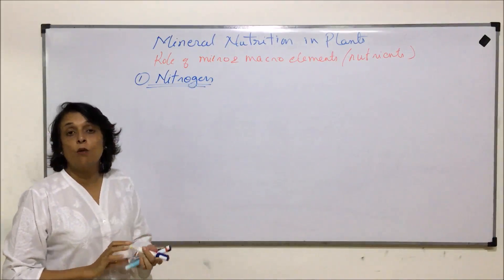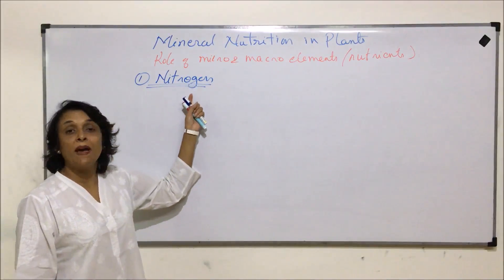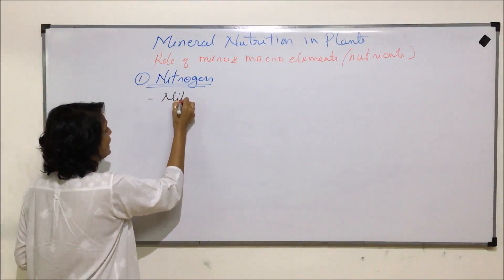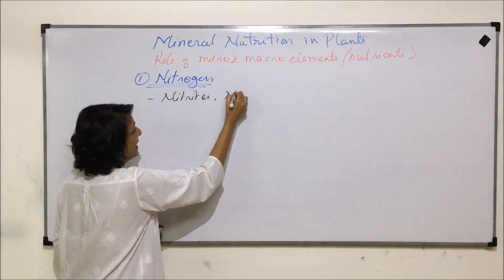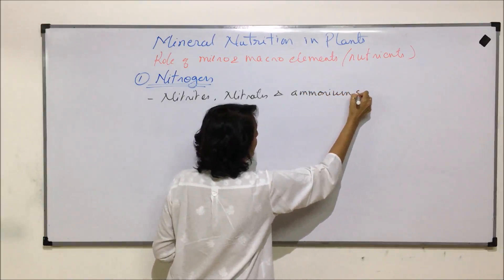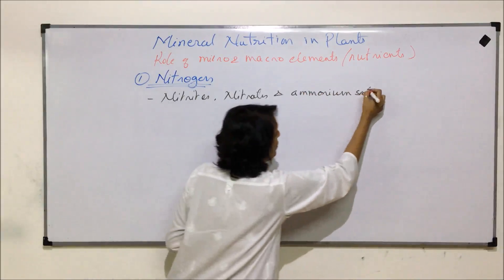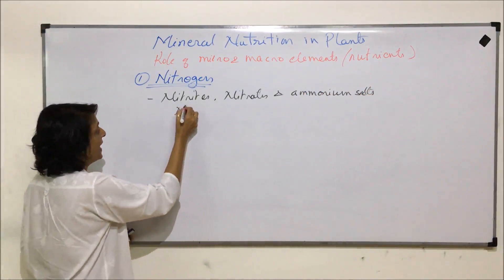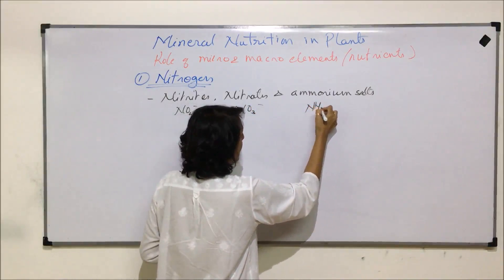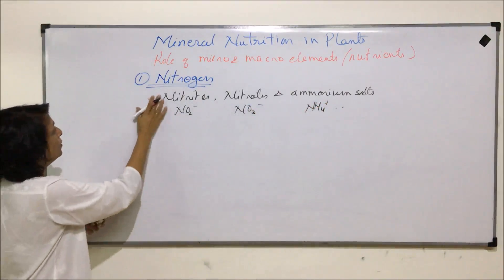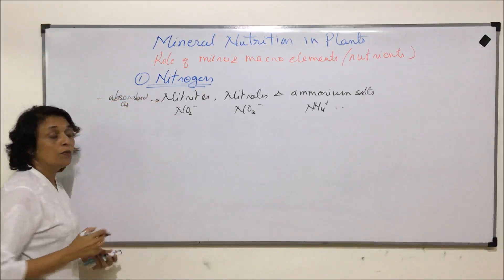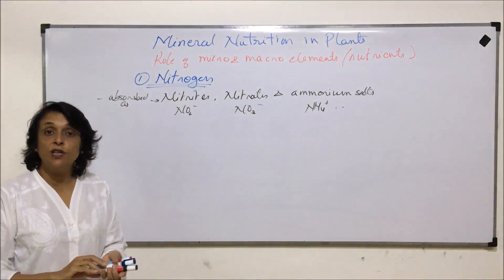Let us first start with nitrogen. Nitrogen is one of those essential elements required in macro quantity, so it is a macro element. It is absorbed in three possible forms: as nitrite (NO₂⁻), nitrate (NO₃⁻), and ammonium salts (NH₄⁺). These are the most essential forms in which nitrogen is absorbed.